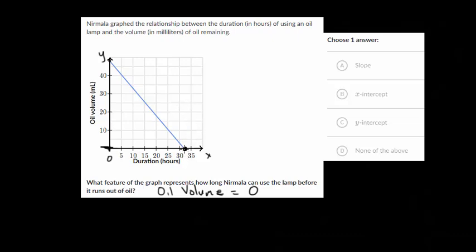And again, it looks to be about 32 or 33 hours, maybe closer to 32. But again, we're not trying to find the exact amount, we just want the feature of the graph. And since this is where it crosses the x axis, this is what we would call an x intercept. But x intercept is the feature that we need to solve this problem.